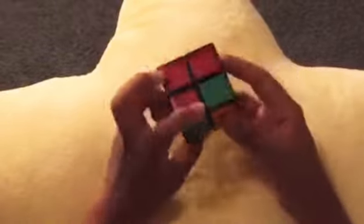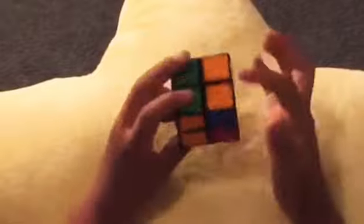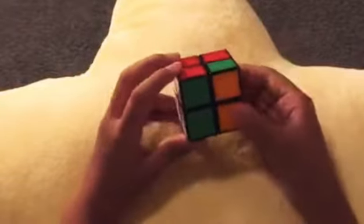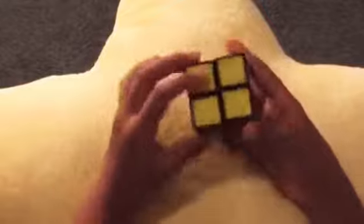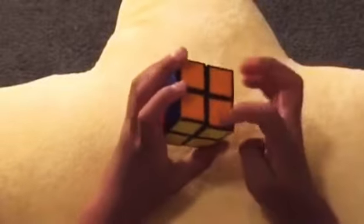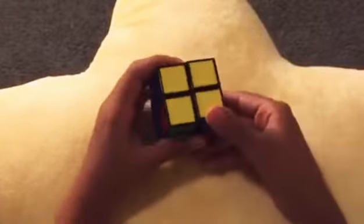And then what you want to do now is you have to see from the bottom layer if you have a match. Line up all the matches, and then yellow is facing up and the match facing away from you.